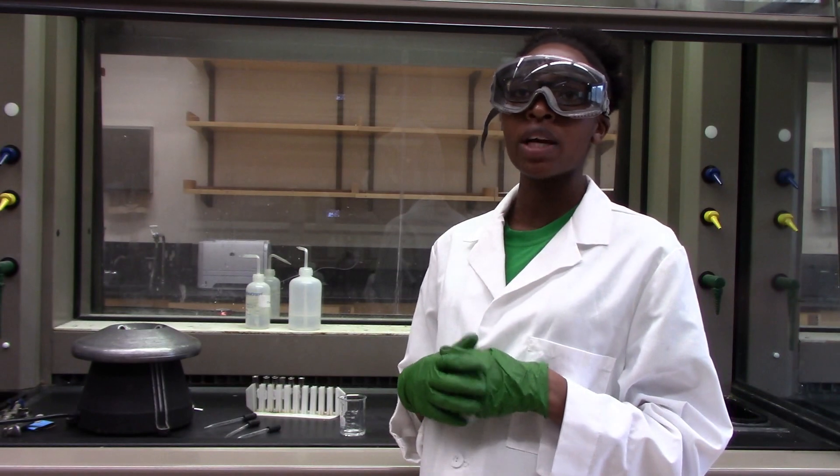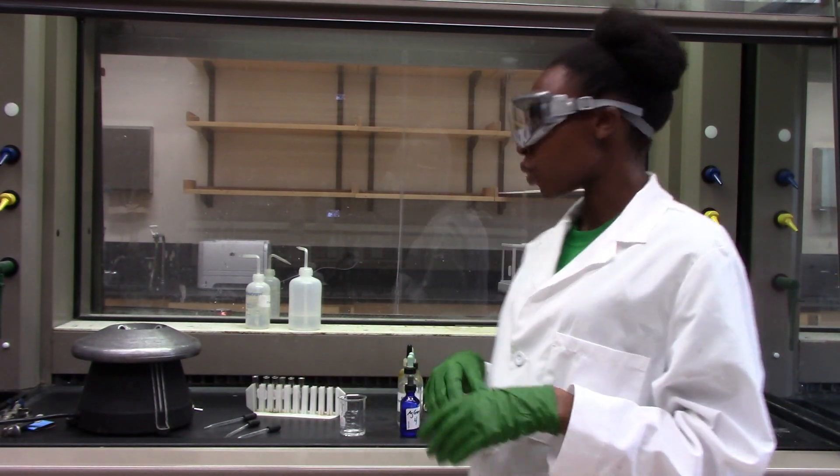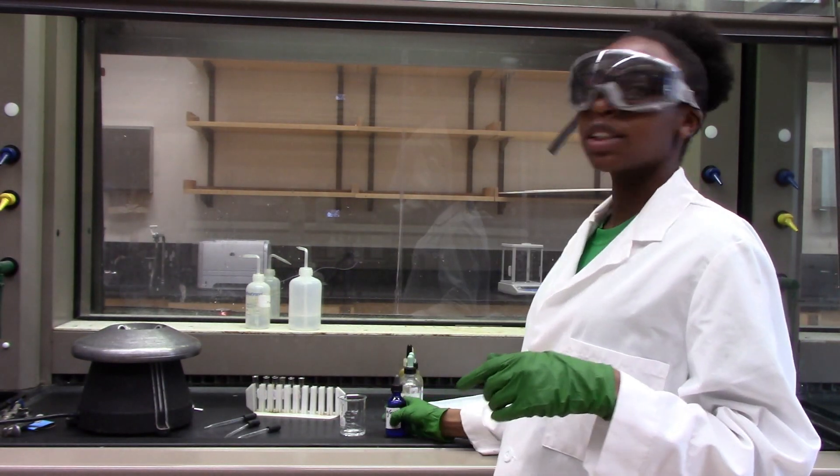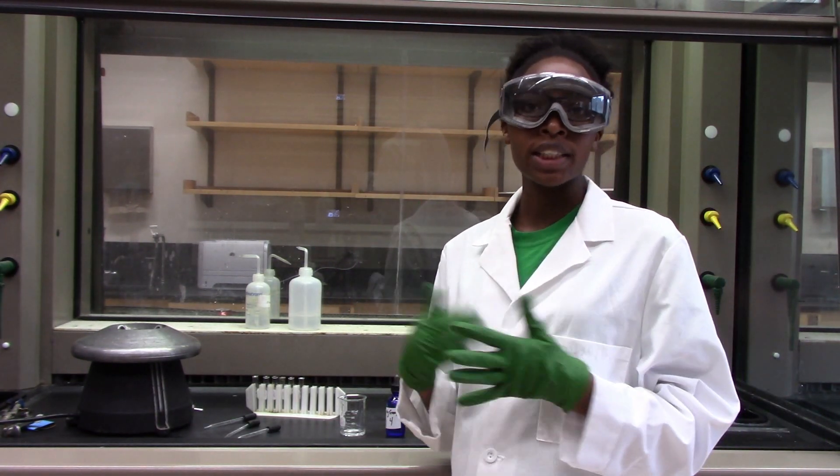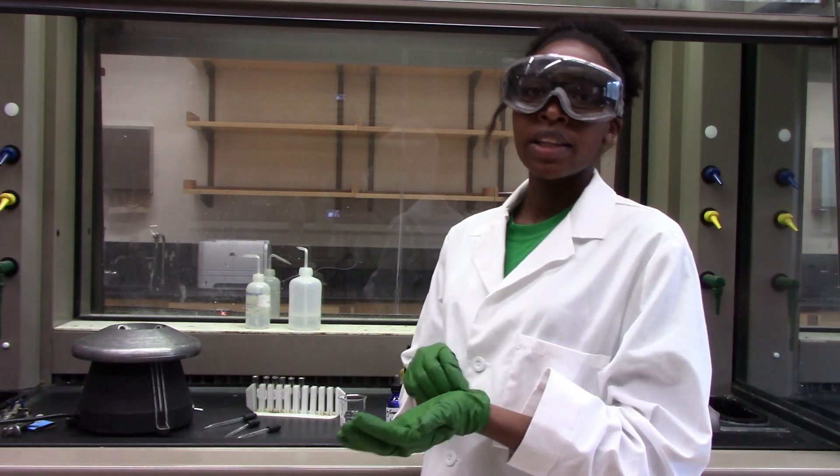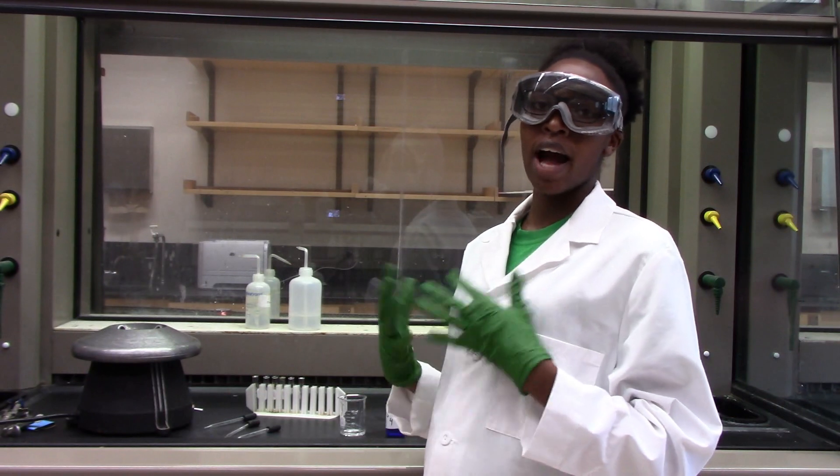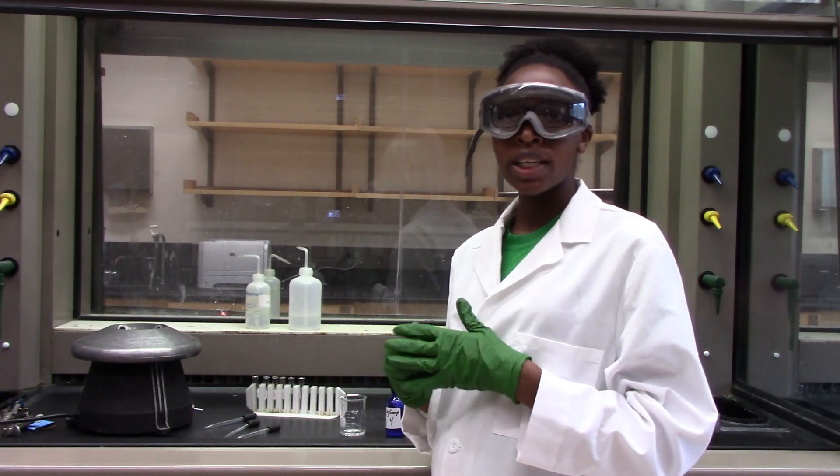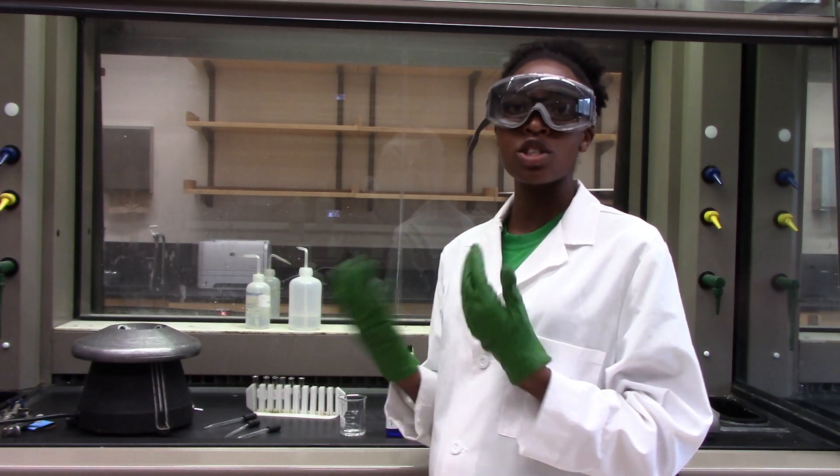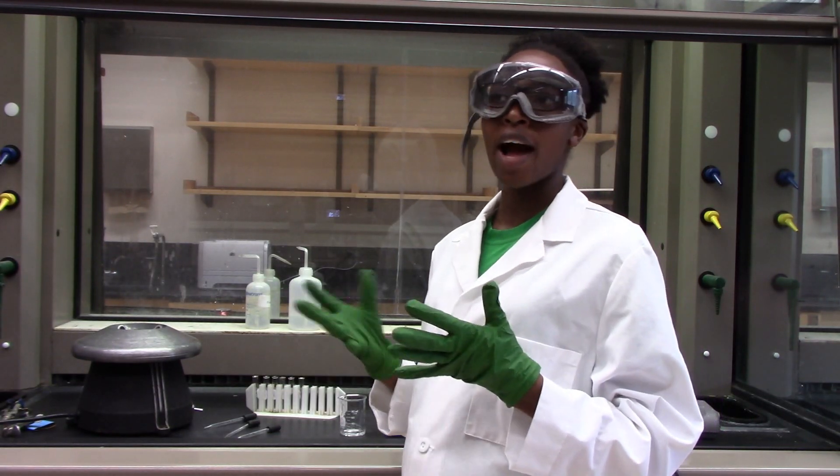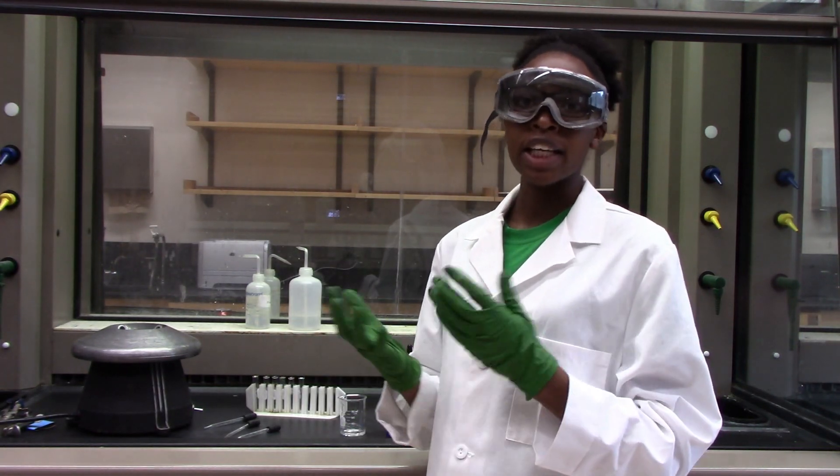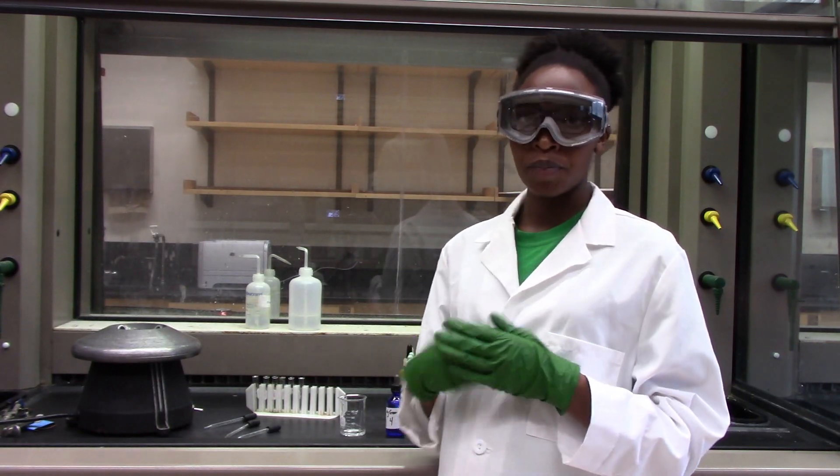Today we are just interested in knowing what is in a solution. We are given an unknown solution here and we are supposed to find out what cations are in there. Silver group cations are called a silver group because they have one thing in common. They are all insoluble salts, all their chlorides are insoluble. Therefore, if we have any chloride in the solution, it should precipitate all of these cations.